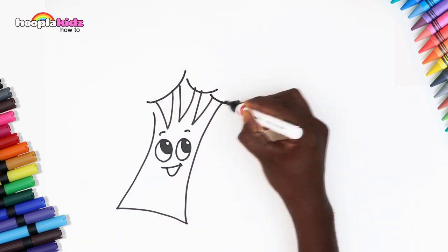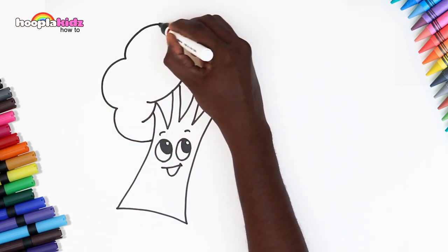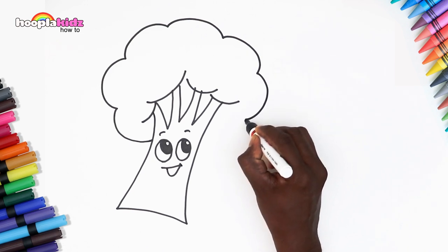He looks great! Draw eyebrows and a white grin for our happy little broccoli. Now connect the V shapes with little curved lines and draw a cloud-like shape for his head. Yes, just like that.